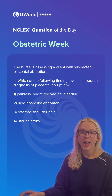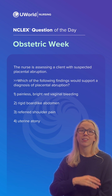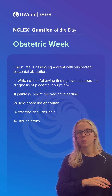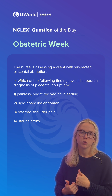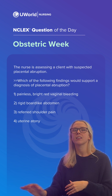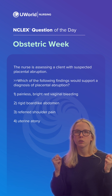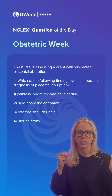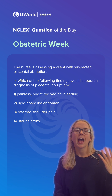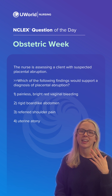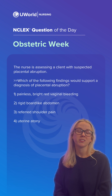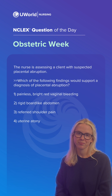And lastly, option four — uterine atony, meaning the lack of tone. In abruption we see the opposite, which would be uterine hypertonicity. In this case the uterus is going to be hypertoned, contracted, hard — not atony, which means a lack of muscle tone. So again, option two was our correct option.